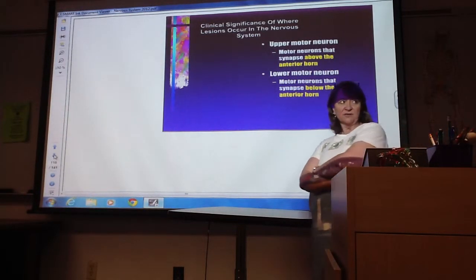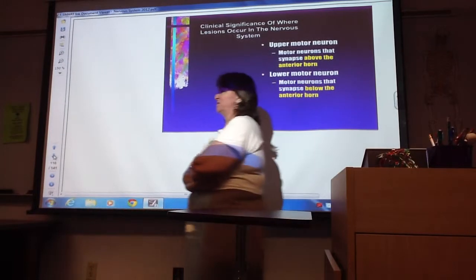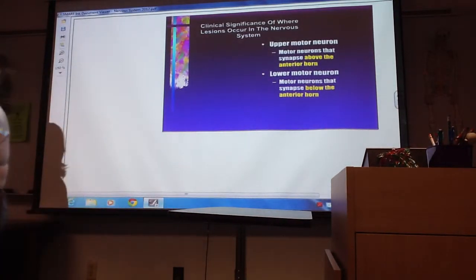So the clinical significance of where lesions occur in the nervous system. This is upper motor and lower motor neuron stuff that came up in the lab the other day. And I promised you we'd get to it.